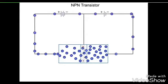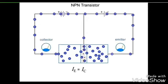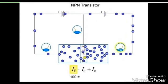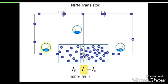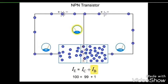In an NPN transistor, the emitter current is the sum of the collector current plus the base current. If you have 100 milliamps at the emitter, you will have 99 milliamps at the collector and 1 milliamp at the base.